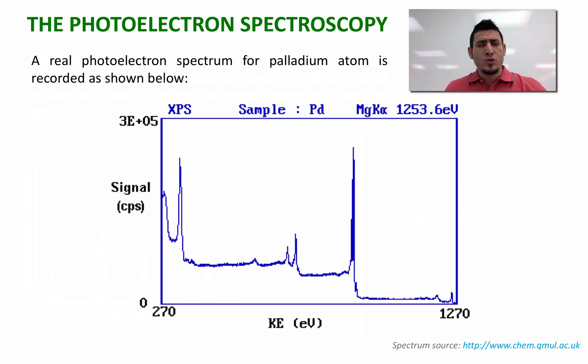Now here I'm going to show you a real photoelectron spectrum for scandium atom. As you can see, it's not as simple and clear as the one I showed you before because it contains a lot of noise and this noise comes from different phenomena. So I'm not going to discuss all this now, but it's good to see how the photoelectron spectrum looks like.